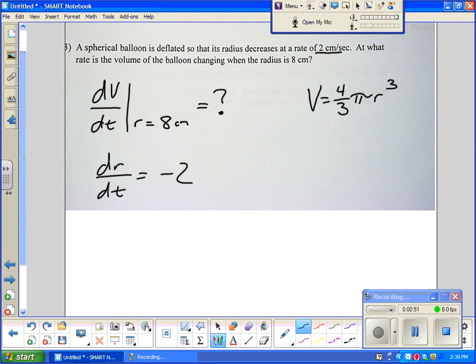Well I think it's negative 2 centimeters per second because it's decreasing. Find the, using the chain rule find the differential with respect to time, which is dV/dt equals 4πr² dr/dt.